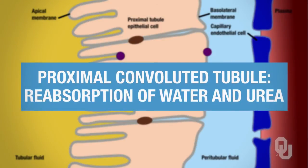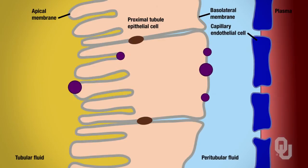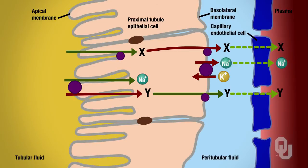All right, so once we have reabsorbed our solutes, that causes the lumen of the tubule to become hypotonic. And if you recall, hypo means less, tonic means solute.